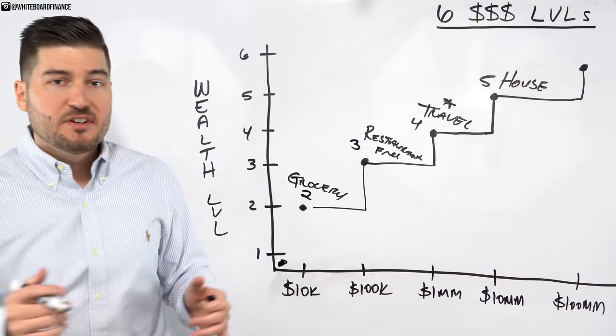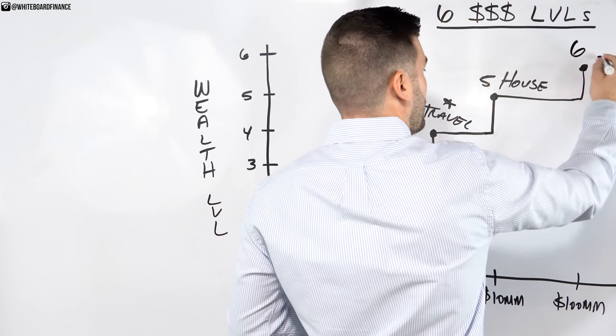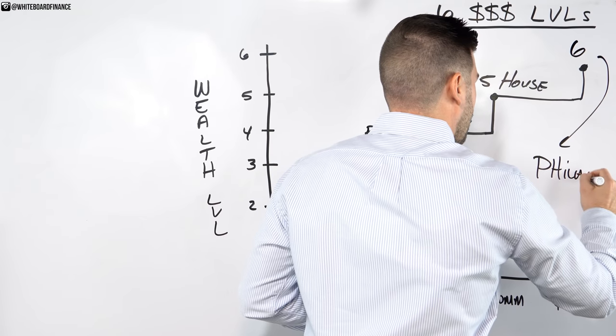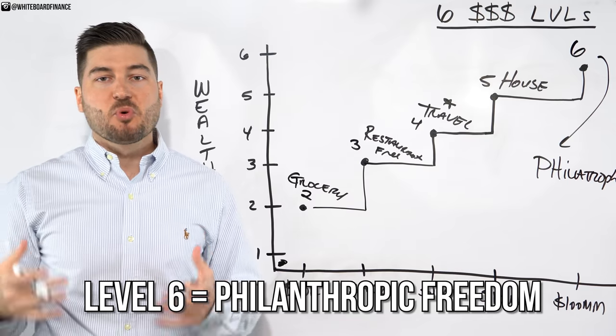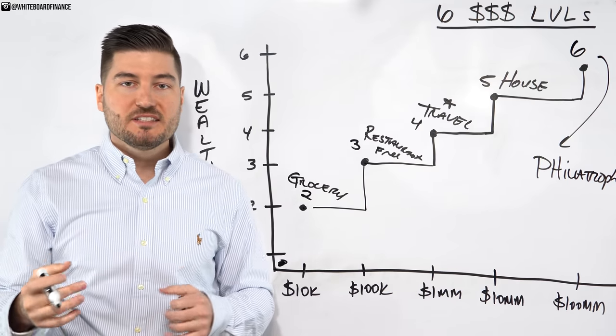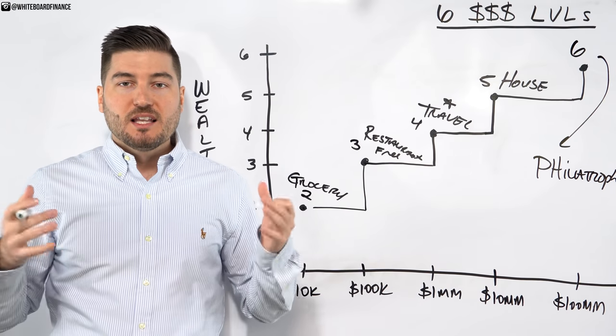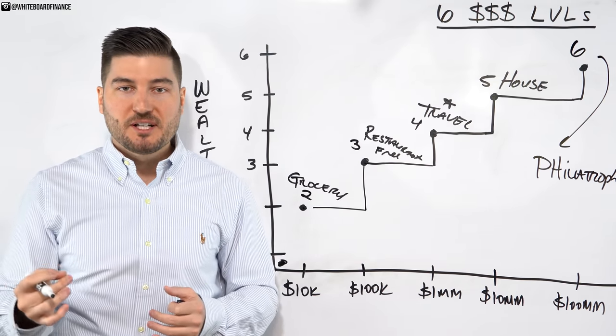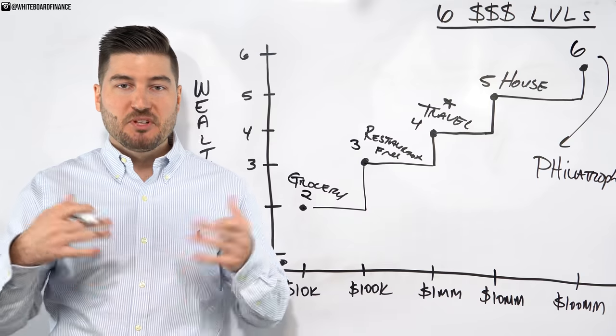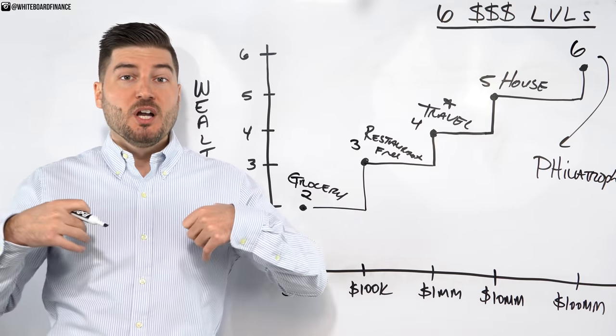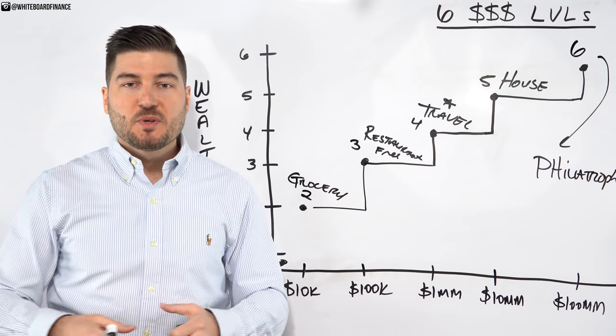And then finally, what we have here is level six, my friends. And this is where you give it away. I'll call this the philanthropy. Level six is the most important level. Level six is literally the entire reason why I started this channel as I hope to get here one day. And I hope that you are able to as well. Level six is philanthropic freedom. You can give away money that has a very large impact on others and is essentially the ability to change people's lives for the better.